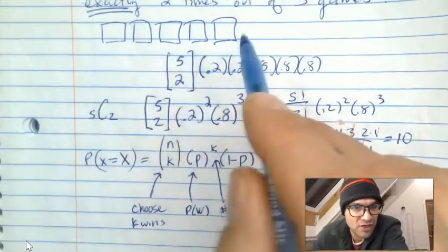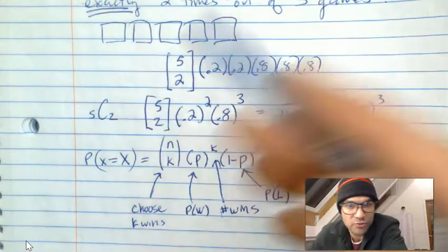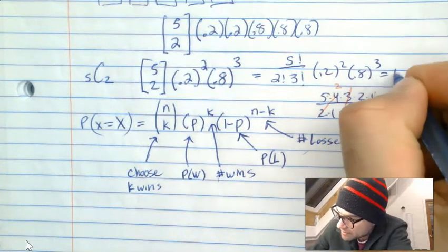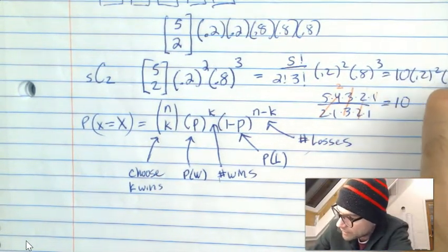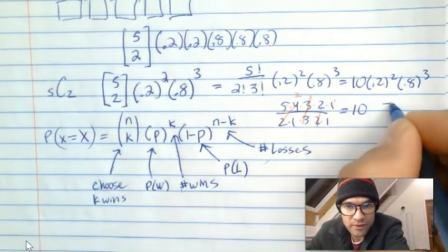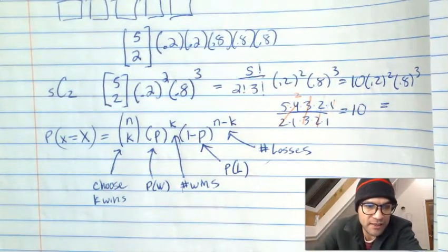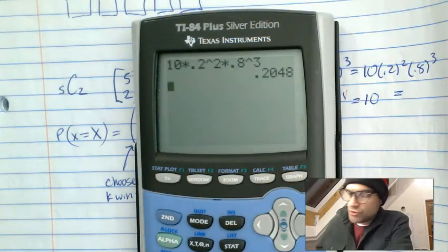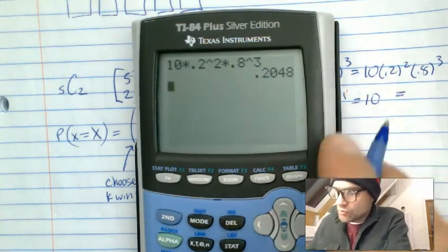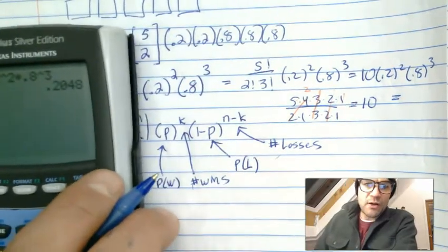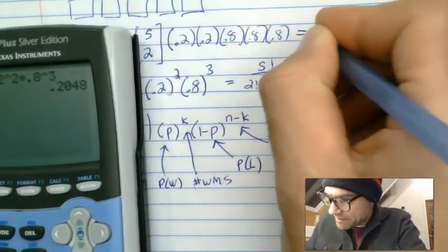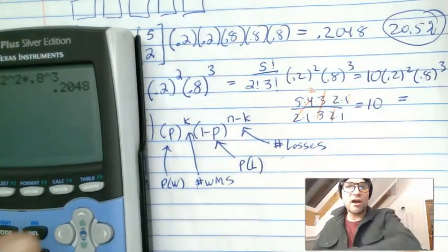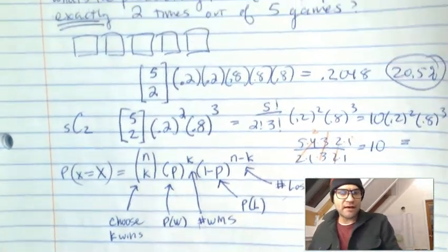Each one of those ways has some arrangement of 0.2 and 0.8 values. So it ends up being 10 times 0.2 squared times 0.8 cubed. Our answer is 10 times 0.2 squared times 0.8 to the third, which gives 0.2048 — about a 20.5% chance of winning exactly two times out of five.